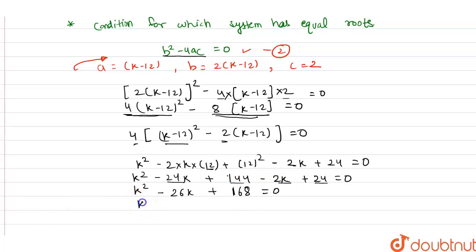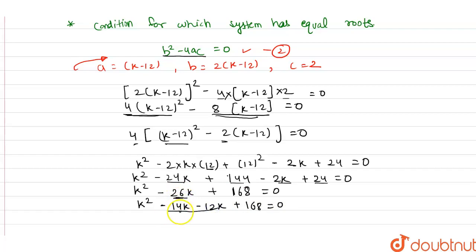Now using the middle term split method, we split minus 26k into minus 14k and minus 12k, since adding gives minus 26k and multiplying gives 168k squared. So we write: k squared minus 14k minus 12k plus 168 equals zero.